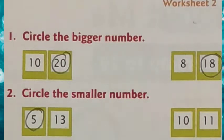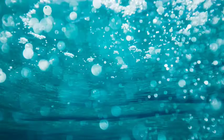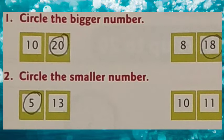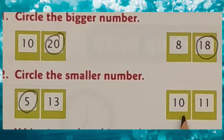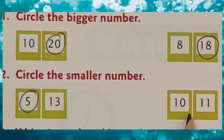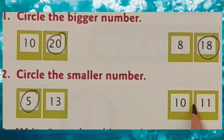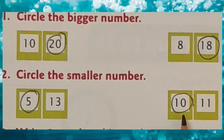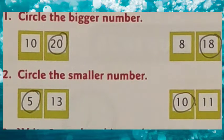Next they have given 10 and 11. Out of these two numbers, which is the smaller number? It is 10, because 10 comes before 11. So 10 is the smaller number when compared to 11. Is it clear, children? Did you understand?